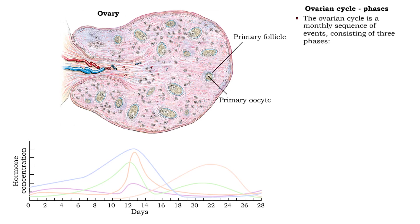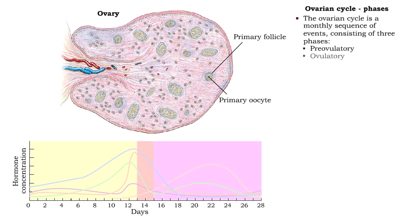The ovarian cycle is the monthly sequence of events that takes place in the ovaries. The three phases of the ovarian cycle are the pre-ovulatory phase, the ovulatory phase, and the post-ovulatory phase.